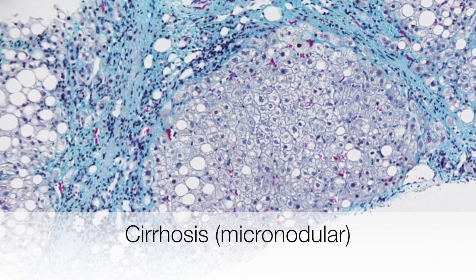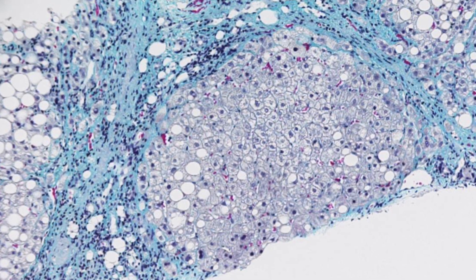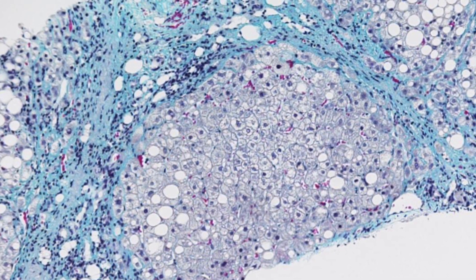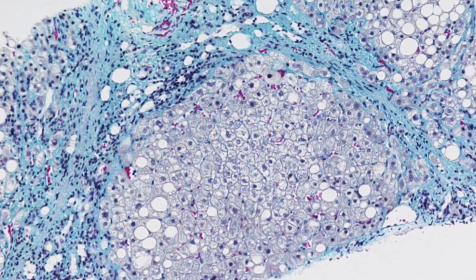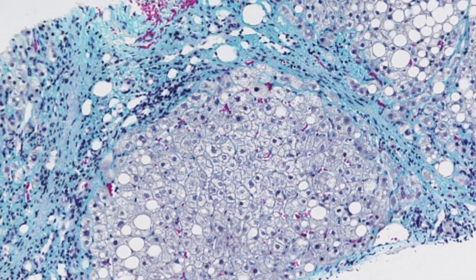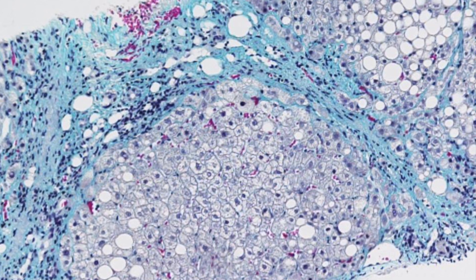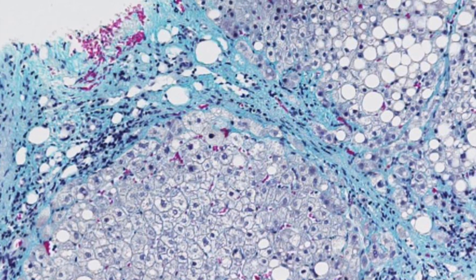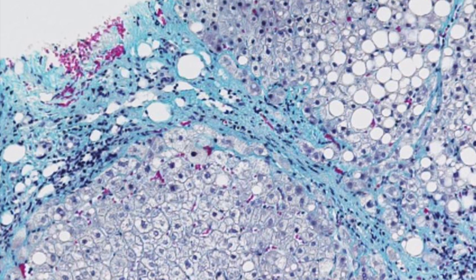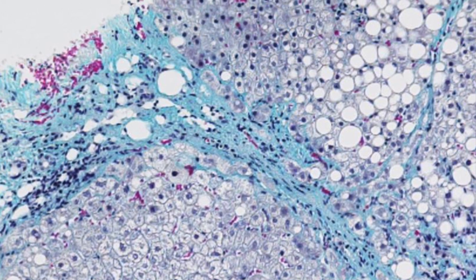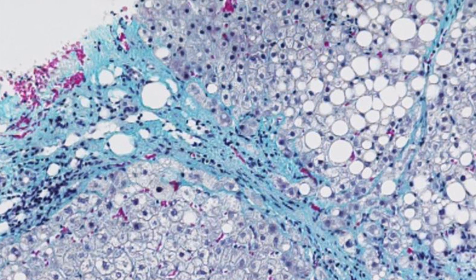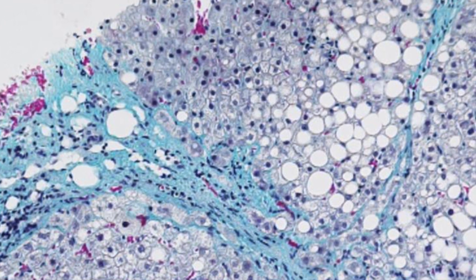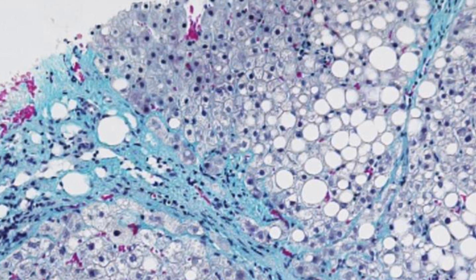This liver biopsy shows micronodular cirrhosis. The blue-staining area is fibrous tissue stained with the trichrome stain MSB, and the hepatic parenchyma has been broken into nodules less than 3 mm in diameter. The diameter of the nodules is almost the same as the width of the core biopsy, nicely proving the diagnosis. The biopsy also suggests the likely etiology — the white holes visible in the hepatocytes are fat that has dissolved out, indicating fatty change, which is a feature of alcoholic liver disease and is also seen in non-alcoholic fatty liver disease.